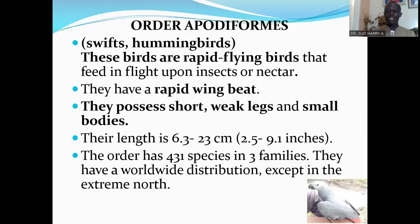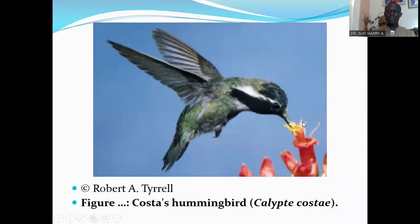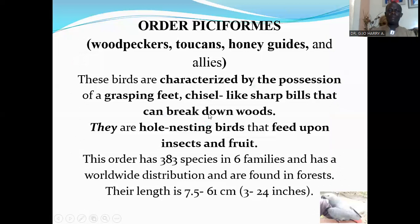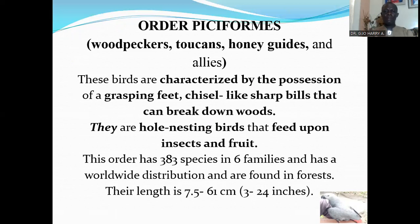Here is a picture of Costa's hummingbird feeding on nectar — when feeding, it beats its wings so fast. The next order is Order Piciformes, which consists of the woodpeckers, toucans, honeyguides, and others. These birds are characterized by the possession of grasping feet and chisel-like sharp bills that can break down wood. They can grasp their prey, and woodpeckers can feed on fish and other organisms.